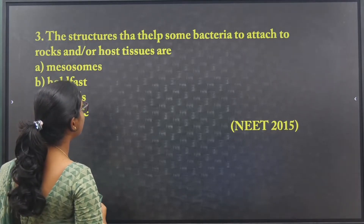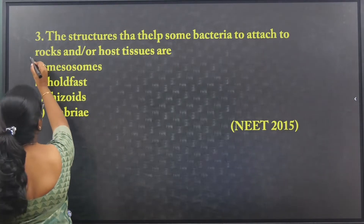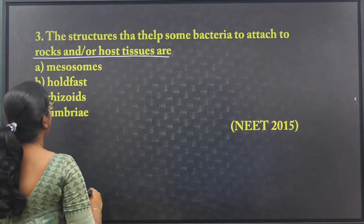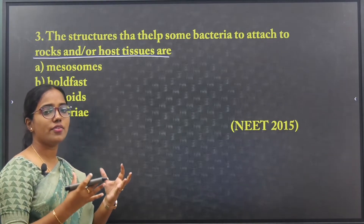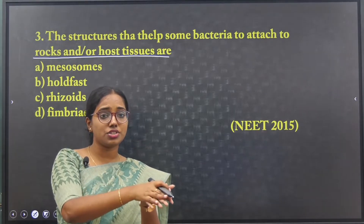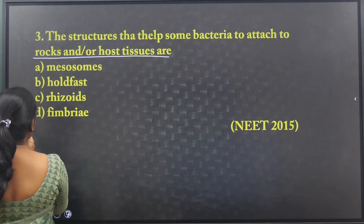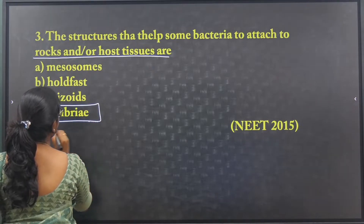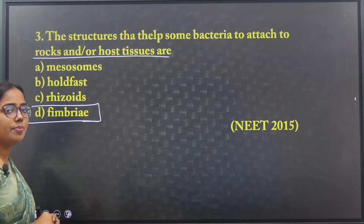Next question: The structure that helps some bacteria to attach to rocks or host tissues. The answer is fimbria. So the structure responsible for attachment in bacteria is fimbria.